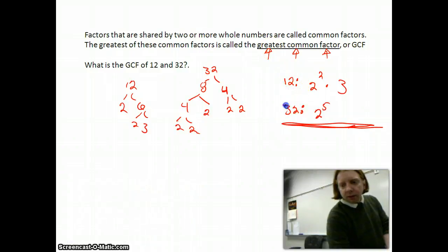When I look down the line here, they have in common 2 squared. If I look down the 3's, there's only the 3 in the 12, there's no 3 in 32. So it looks like my greatest common factor is 4.